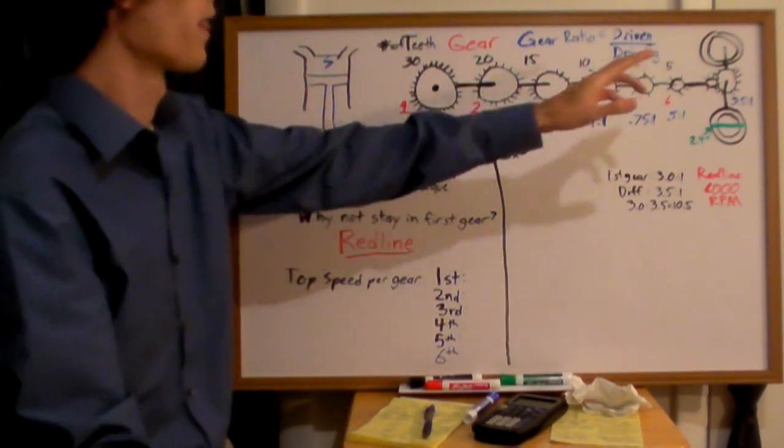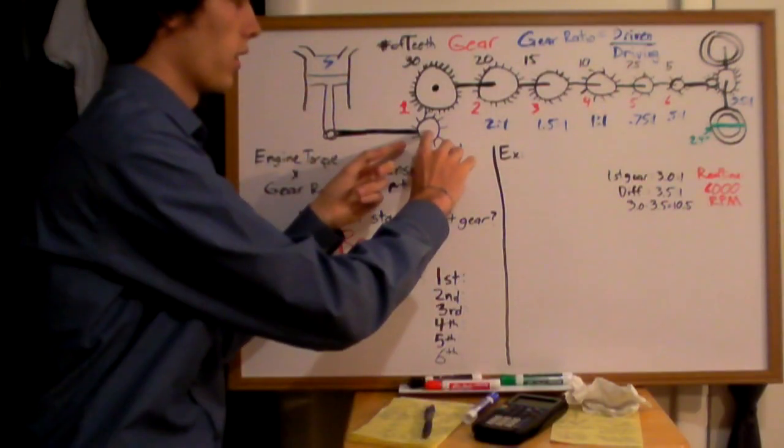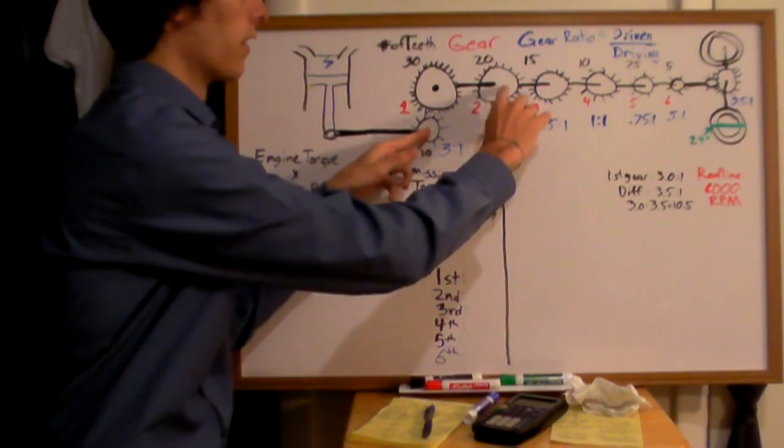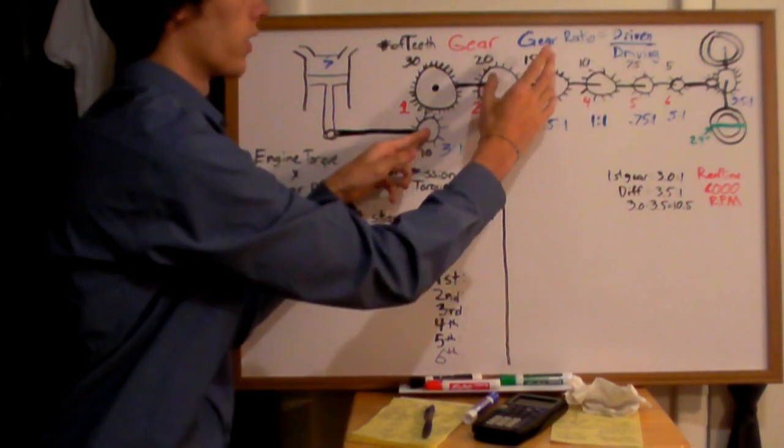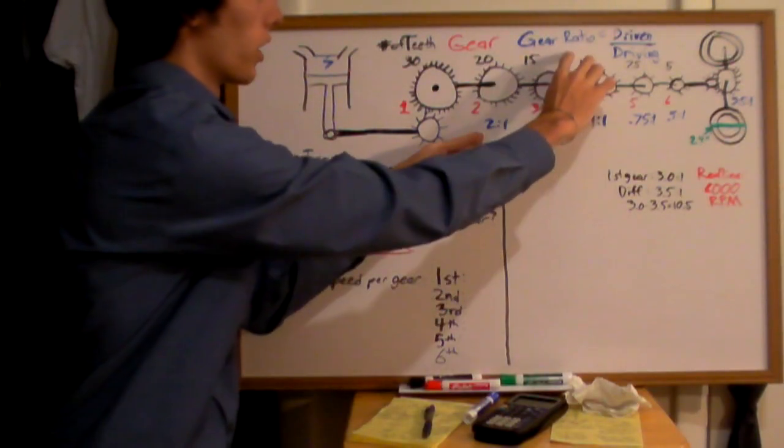The gear ratio is the driven gear over the driving gear. This right here is your driving gear. So it's got 10 teeth. This here is your driven gear. It's got 20 teeth. So 20 divided by 10, 2 to 1 is your gear ratio.